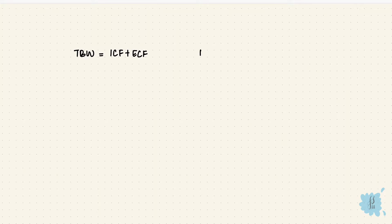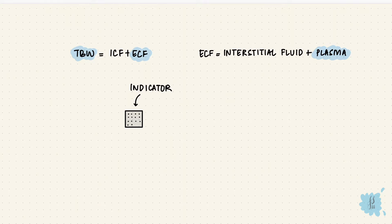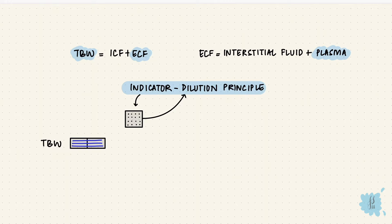The volume of total body water equals the volume of the ICF plus that of the ECF, while the ECF volume equals the volume of interstitial fluid plus the plasma volume. These three — total body water, the ECF, and the plasma volume — can be measured by placing an indicator in the compartment and allowing it to distribute evenly, then assessing its dilution; that's the indicator dilution principle. Different indicators are used depending on what we're measuring. For total body water, it would be something that crosses the cell membrane; for the ECF, it should not cross the cell membrane; and for the plasma volume, it should not cross the capillary membrane nor enter the RBCs.